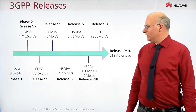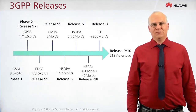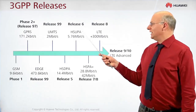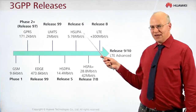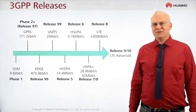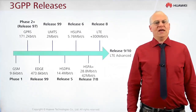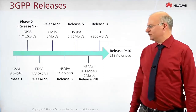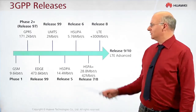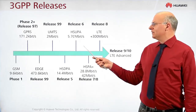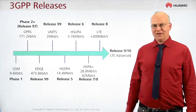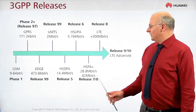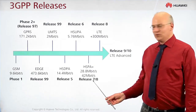The next important step for the radio technology was in Release 6, which introduced HSUPA — High Speed Uplink Packet Access, also called Enhanced Uplink. It offers 5.76 megabit per second in the uplink.